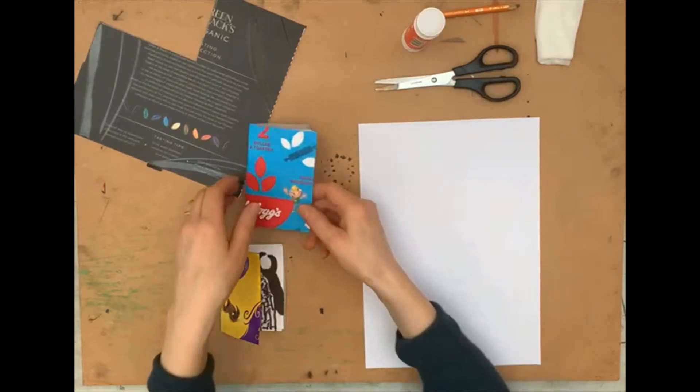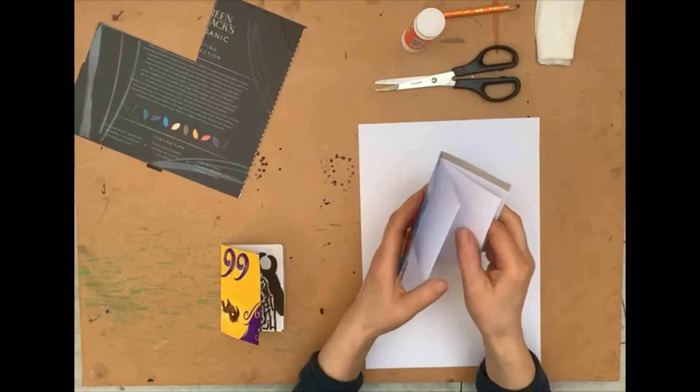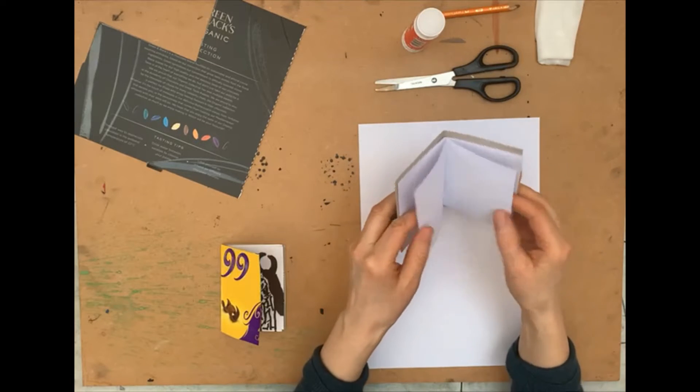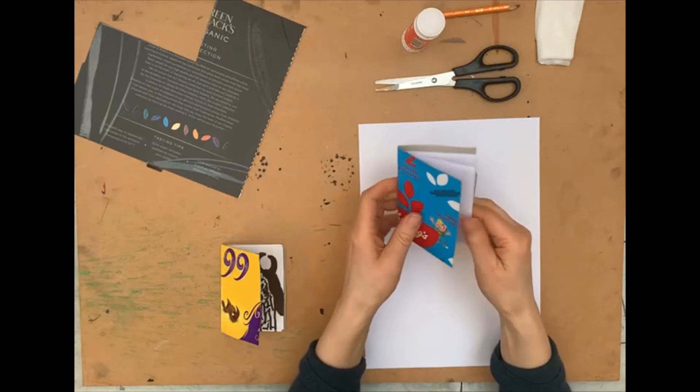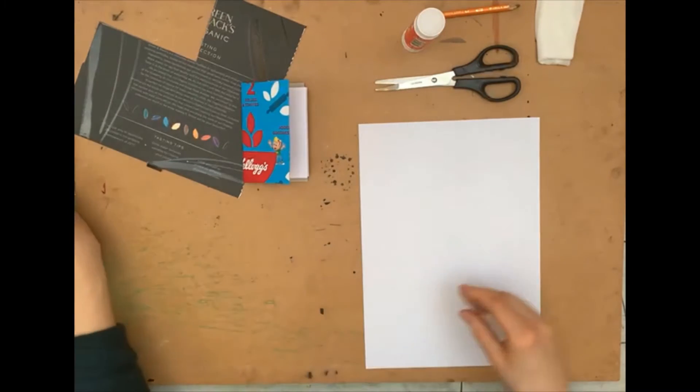In our third book we're going to be making a book which doesn't require an elastic band. The outside pages are actually glued to a cover and that's how that works. So let's have a go at making it.